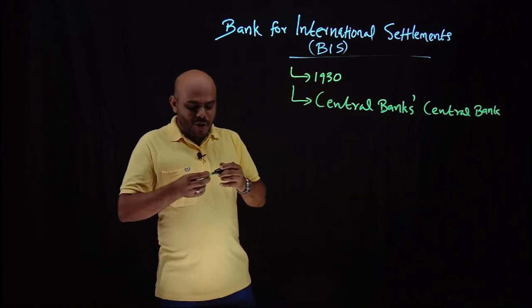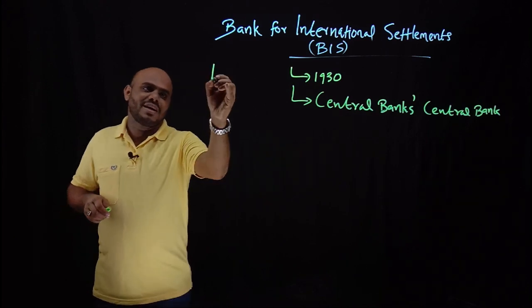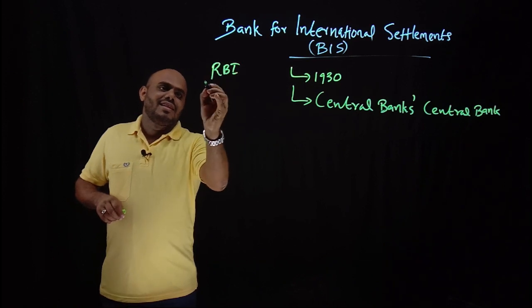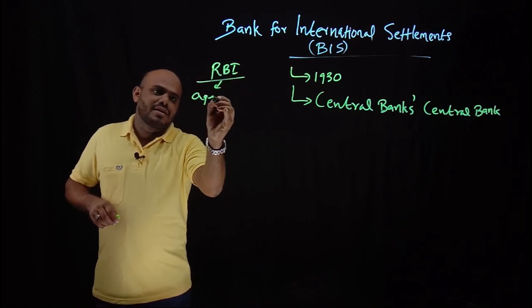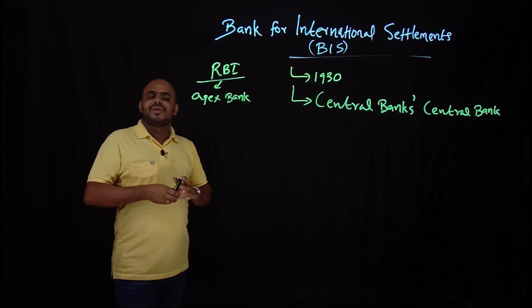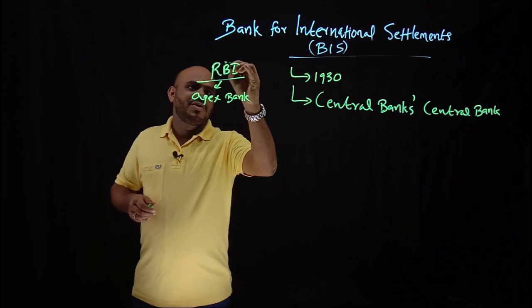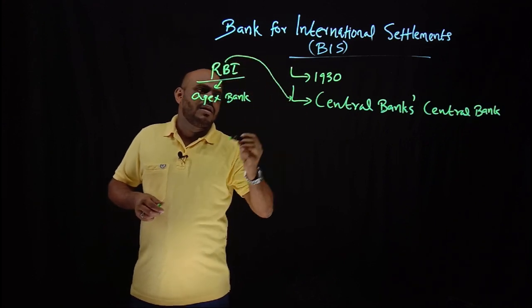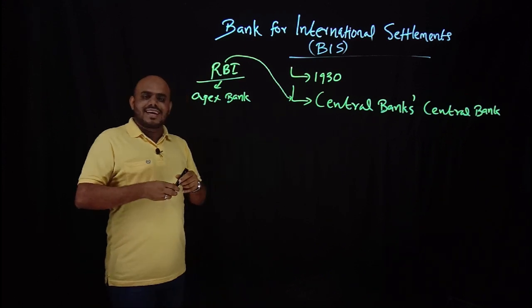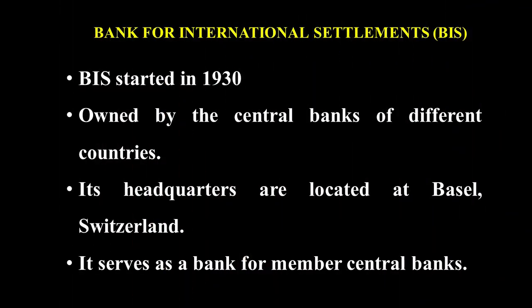We know the importance of central banks in a country. For example, RBI — Reserve Bank of India — is the apex bank in India, the unquestioned authority to design monetary policies in India. Interestingly, RBI receives advice, guidelines, and norms from BIS, the Bank for International Settlements, which is actually the central bank of all central banks.